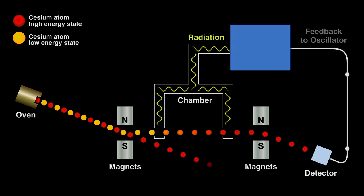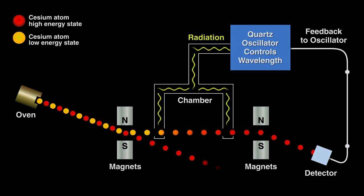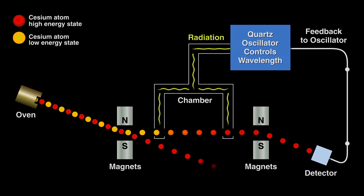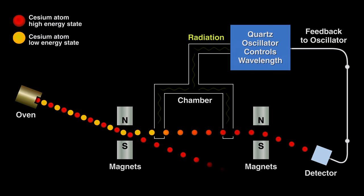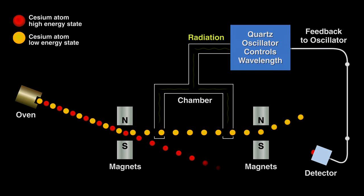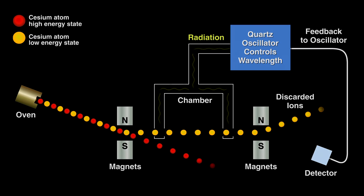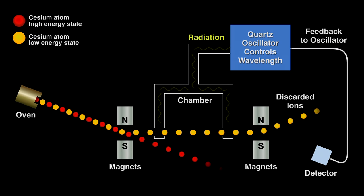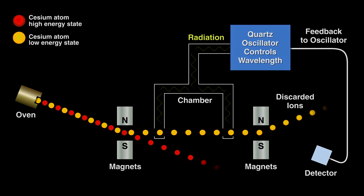The trick here is to tie that current from the detector to the quartz oscillator. When the quartz's oscillations decay, that is, it slows down a little, then the energy bombarding the cesium ions in the chamber changes and fewer high energy ions exit the chamber so current decreases or stops.